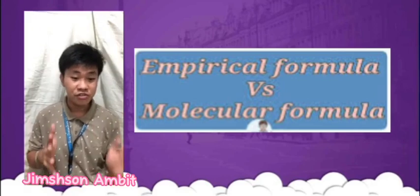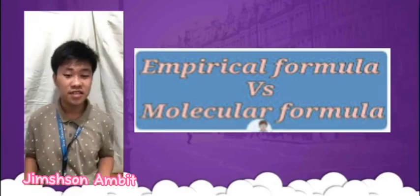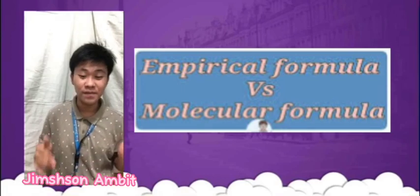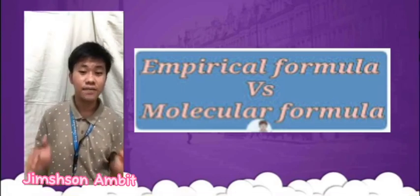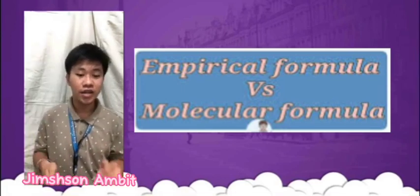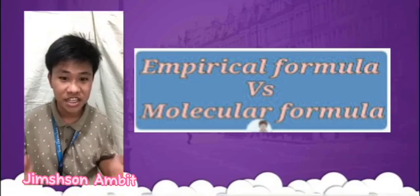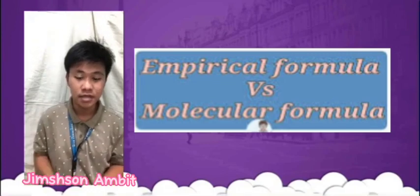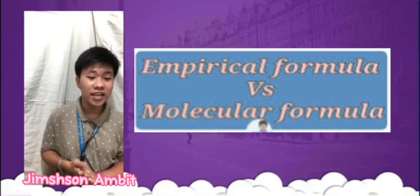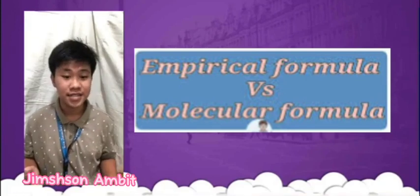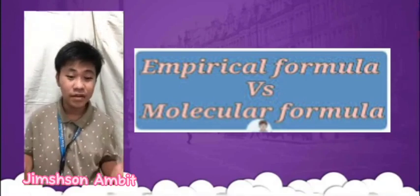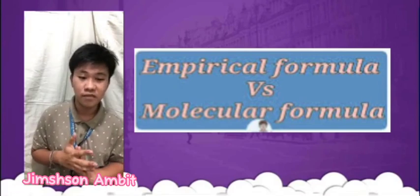In chemistry, a chemical formula is a consistent way of representing the elements that make up a compound and the numbers of atoms of each element. There are two main types of chemical formulas: empirical formulas and molecular formula.